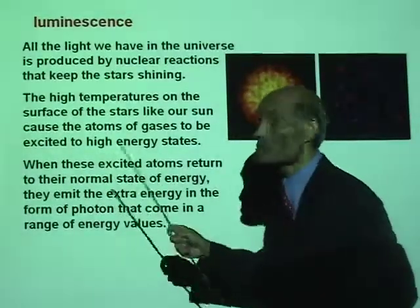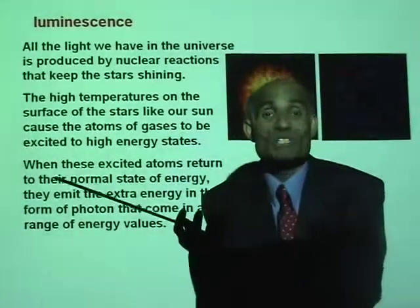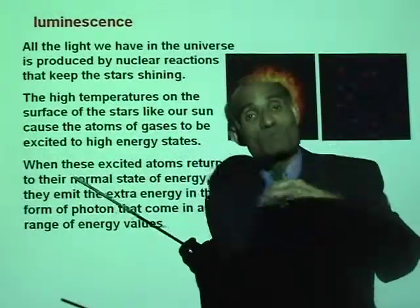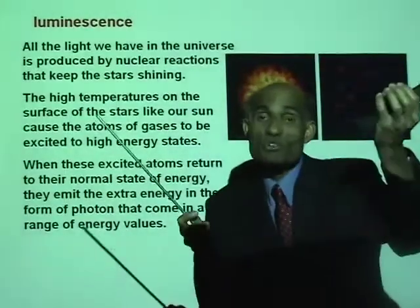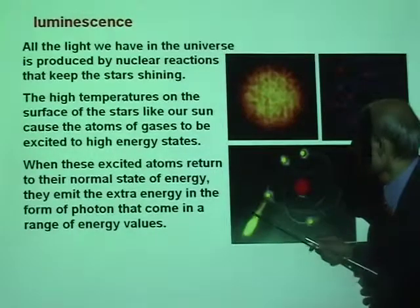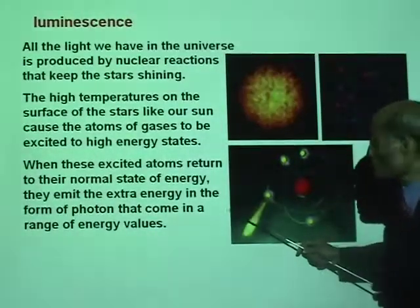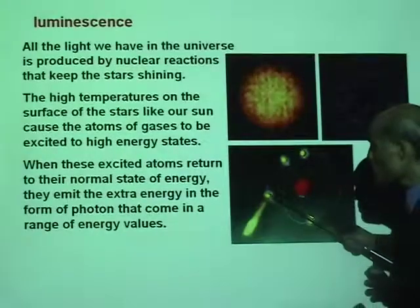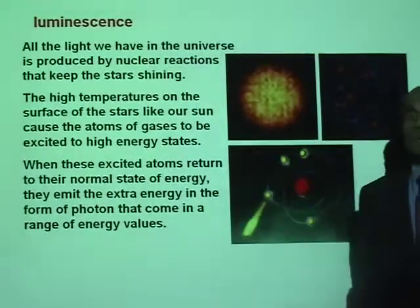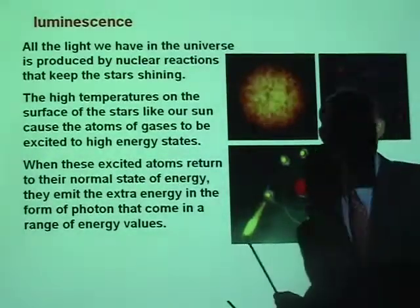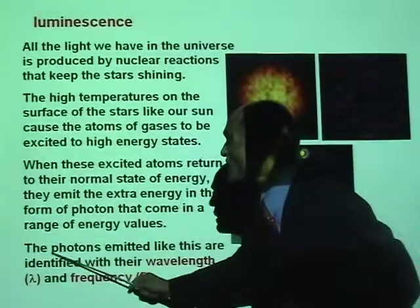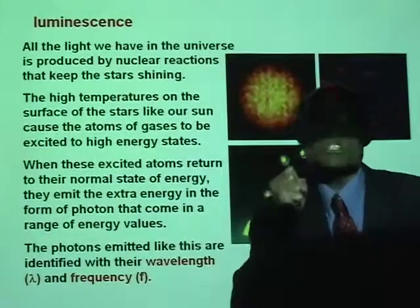Atoms don't remain excited for very long. They have to come back to the normal state. This electron coming from an outside orbit into the inner orbit in its normal position gives off the extra energy, and that extra energy given off is actually light. We call these energy packets — when an electron gets transferred from an outer orbit to an inner orbit, the difference in energy is given off as a packet of energy. We call that packet of energy a photon.